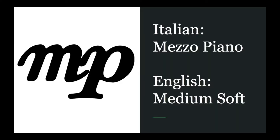Here you see the symbol MP. The P still stands for piano, but now we add the M. The M stands for the Italian word mezzo. Mezzo in English means medium. So this dynamic marking, mezzo piano, means medium soft. Please pay special attention to how we say the word mezzo. In Italian, two z's together make a t-s sound, like the word pizza. We have mezzo.